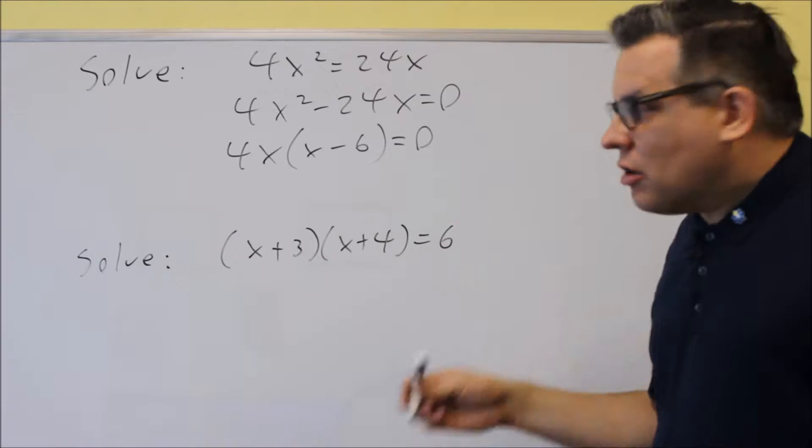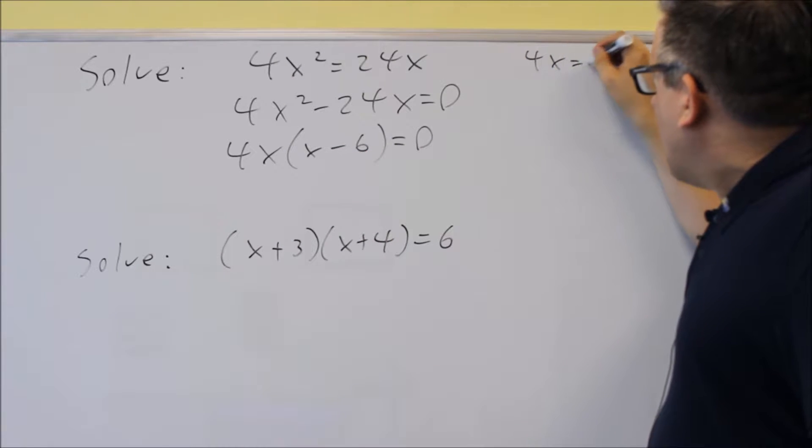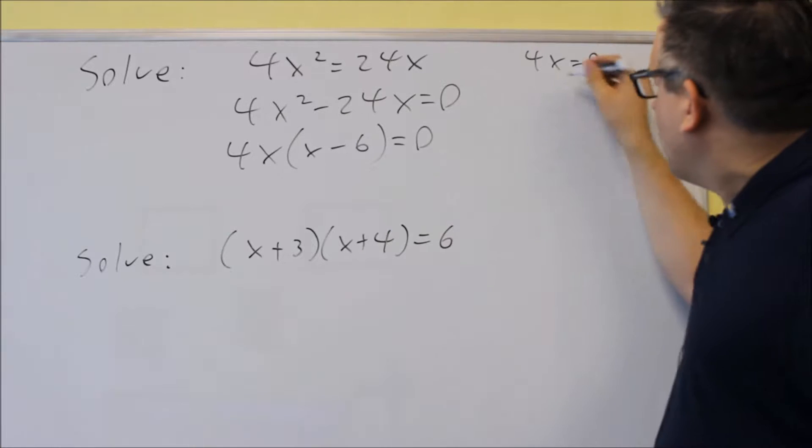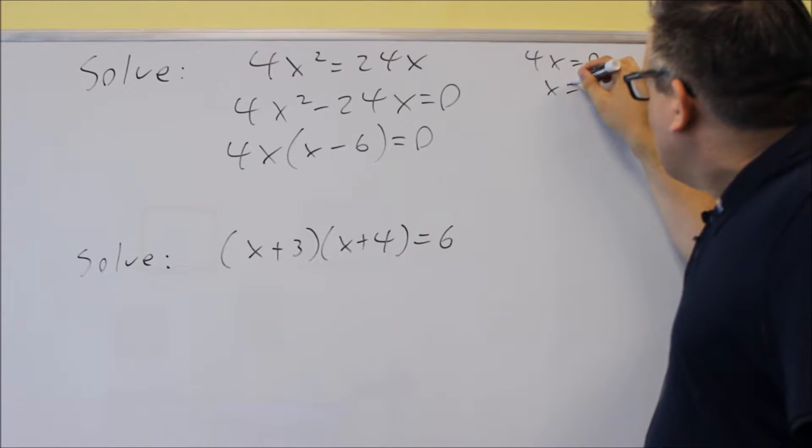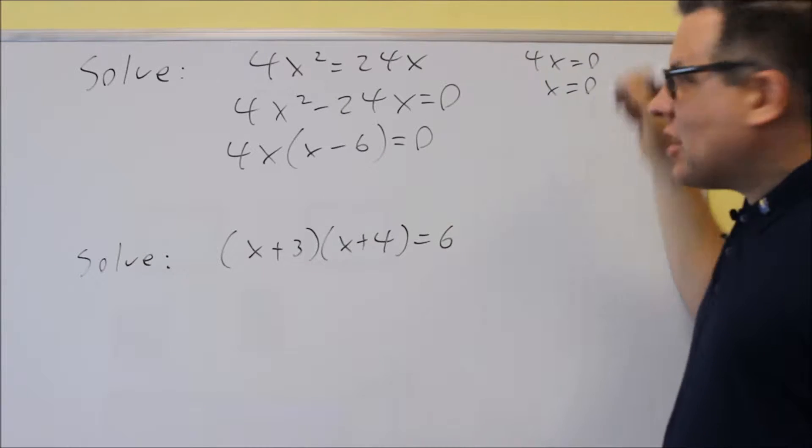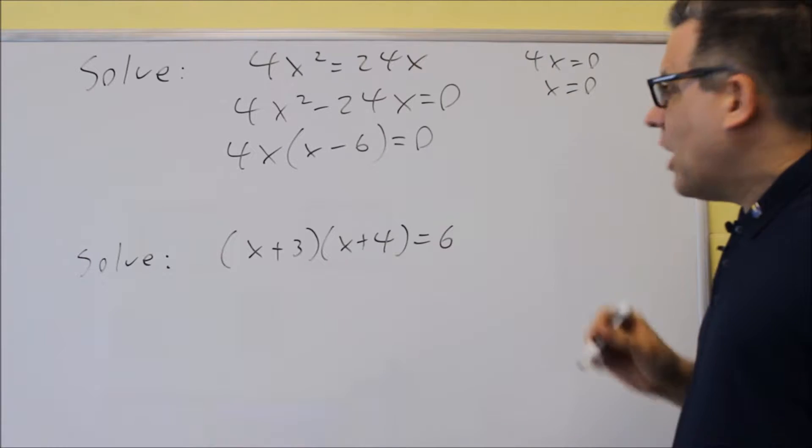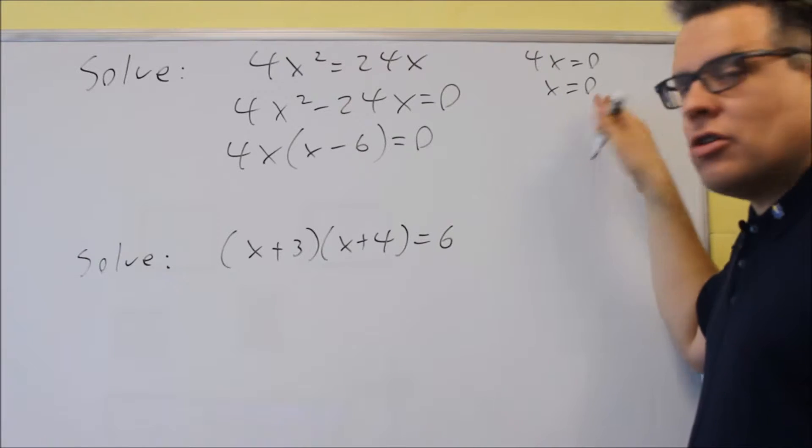So now that I have it set equal to zero, I'm going to take each one of these individually, set them equal to zero, and solve. So I have 4x equals zero. When I divide, I get x is equal to zero. And again, this is not going to be undefined. I'm not dividing by zero in this case, I'm dividing both sides by 4, so that's why I will get zero as the answer.